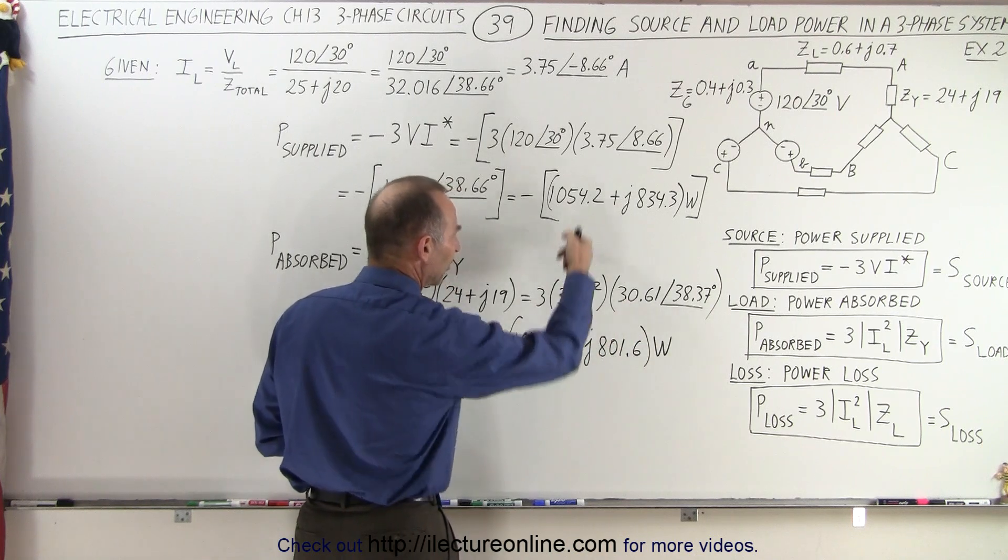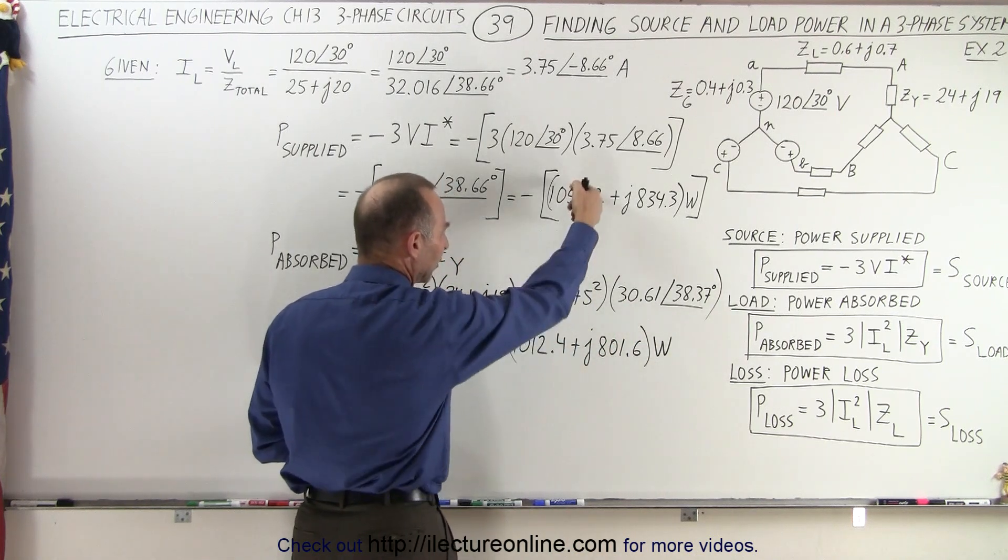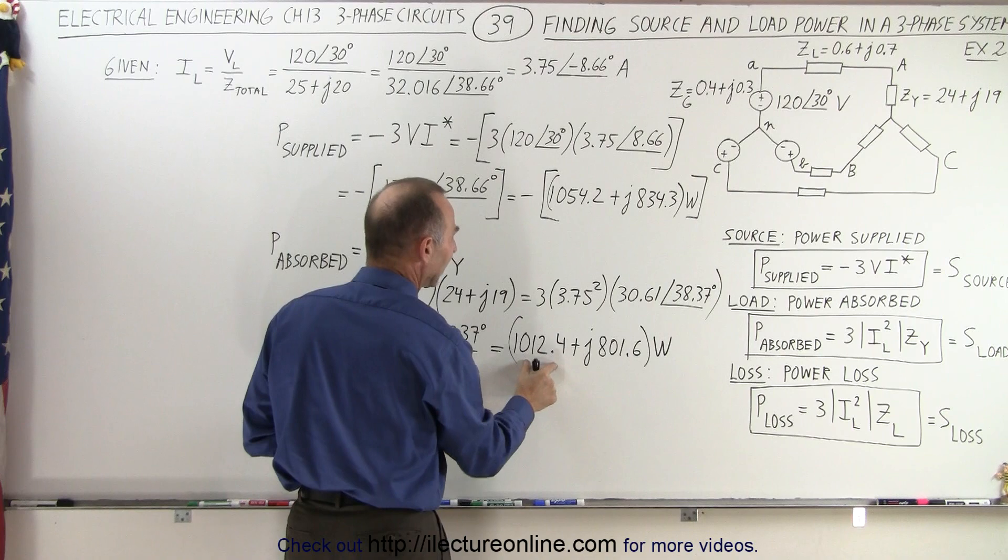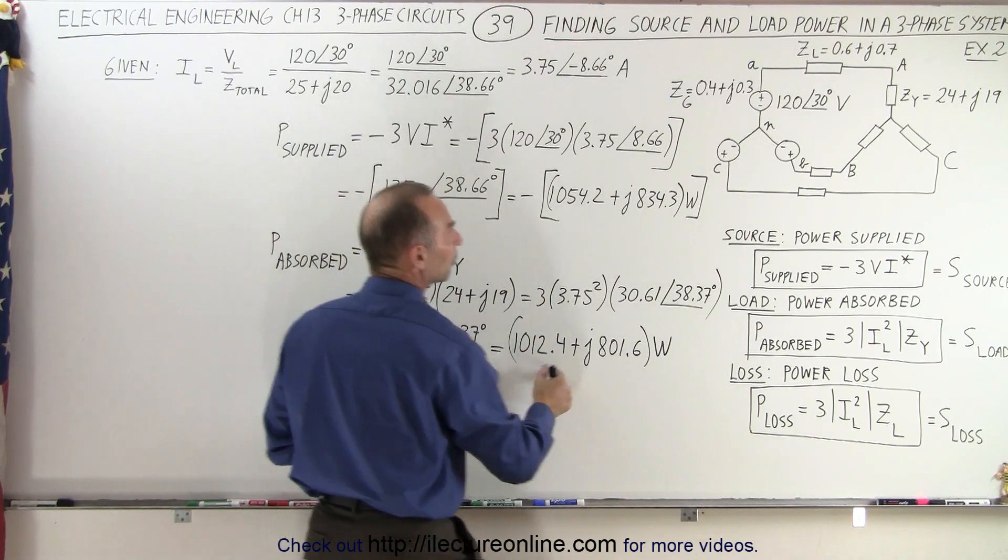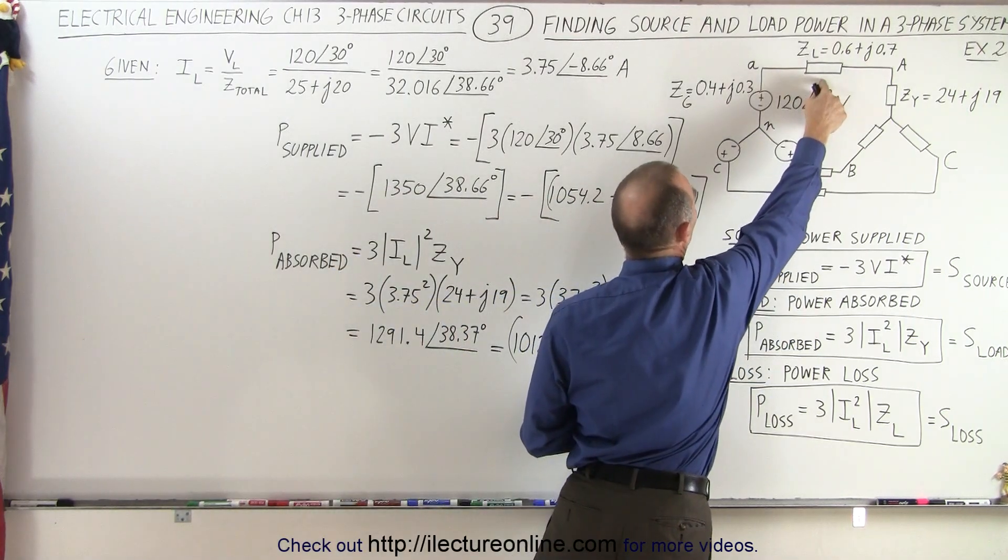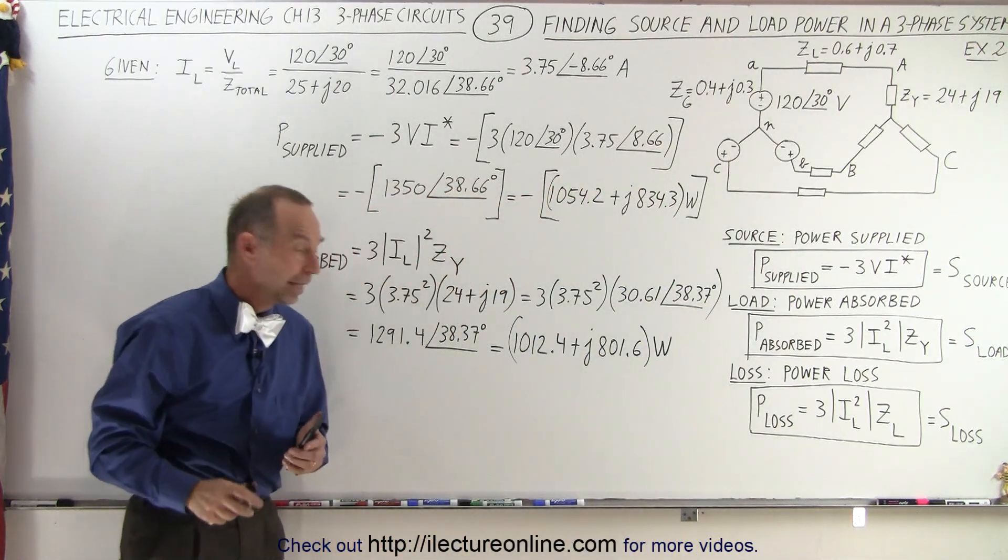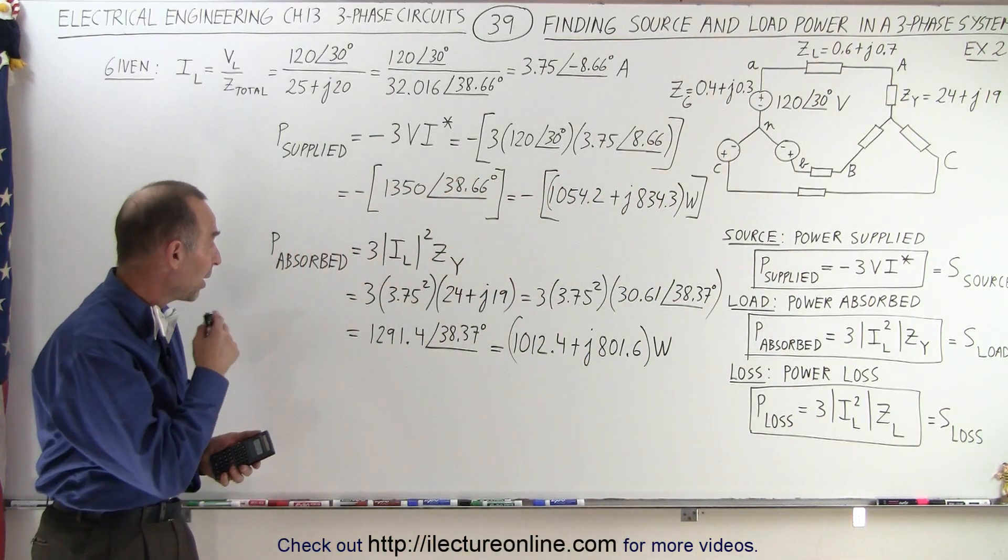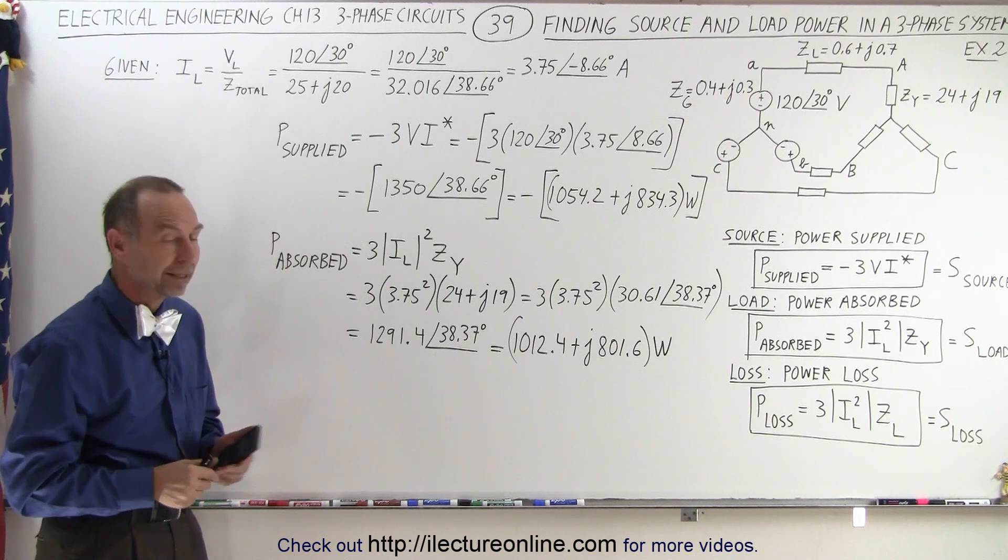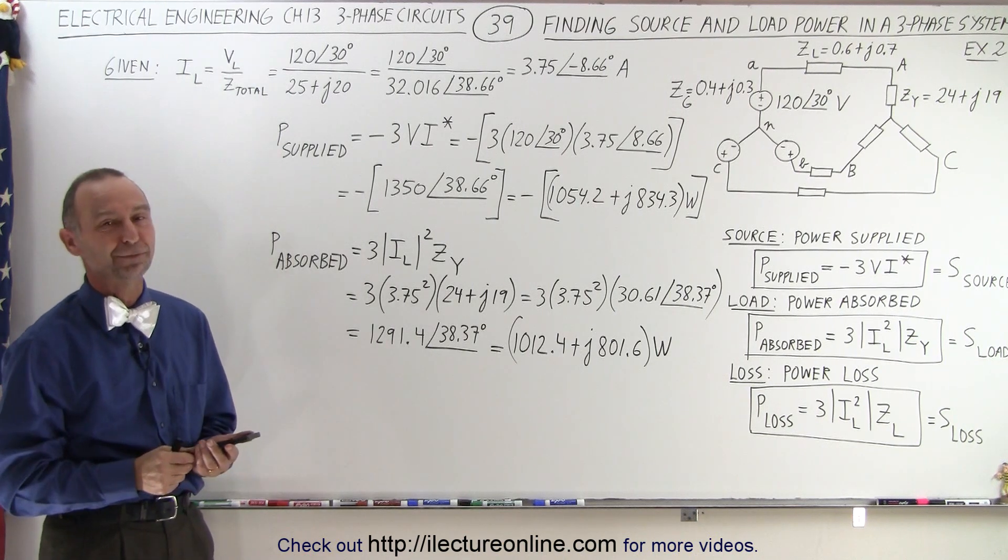And of course this is just temporarily absorbing it back to the system. The real power absorbed and provided is right here. Notice it's slightly less. The difference between the two is of course the power that's lost along the line and the power that's lost in the generator wiring itself. And so that's how we find the power supplied and the power provided in a three-phase system. So that's how it's done.